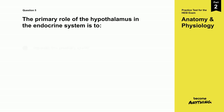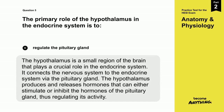The correct answer is D. Regulate the pituitary gland. The hypothalamus is a small region of the brain that plays a crucial role in the endocrine system. It connects the nervous system to the endocrine system via the pituitary gland. The hypothalamus produces and releases hormones that can either stimulate or inhibit the hormones of the pituitary gland, thus regulating its activity.